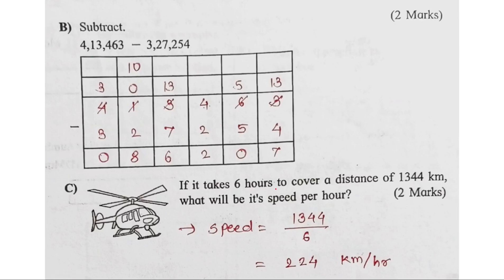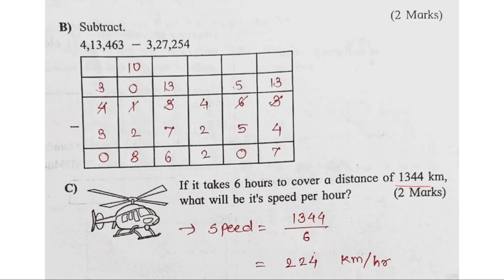If it takes 6 hours to cover a distance of 1,344 km, what will be its speed per hour? Speed equals distance divided by time. So distance is 1,344 km, divided by time which is 6. We get the answer: 224 km per hour. That is the speed.